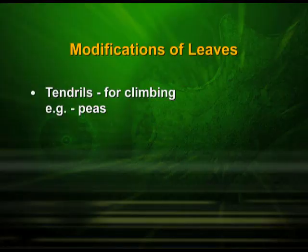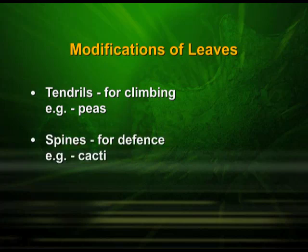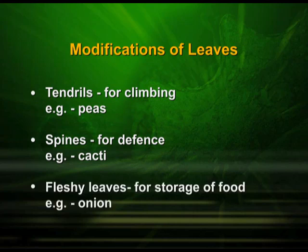Leaves are also modified for various different purposes. In case of peas, the leaves are modified into tendrils for climbing purposes. In case of cacti, they are modified into spines for defense purposes. Whereas in case of onion, the fleshy leaves are modified for storage of food.